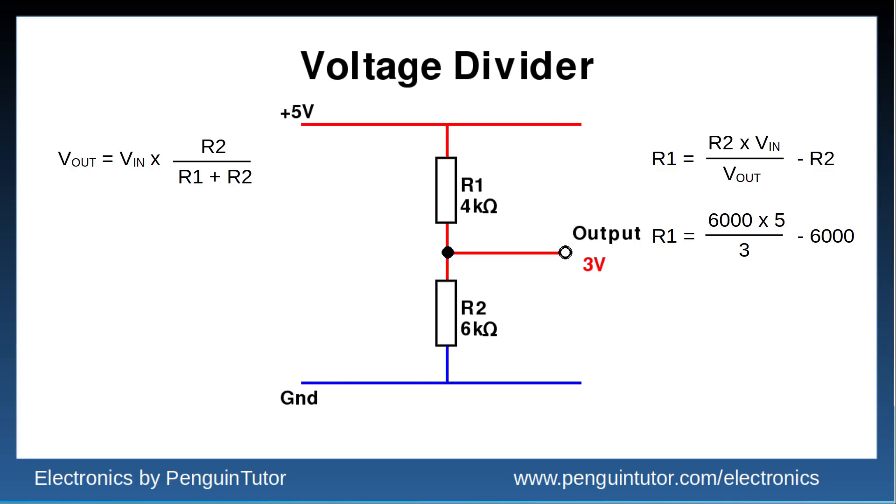Added in the values, we have 6,000 ohms multiplied by 5 volts divided by 3 volts, and then subtract 6,000 ohms, and you have 4,000 ohms, or 4 kilo ohms.